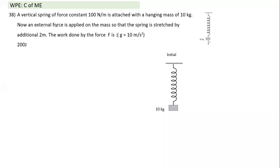Next question: a vertical spring of force constant k = 100 N/m has a hanging mass of 10 kg. 'Hanging' means the spring is already elongated by x₀ = mg/k = 10×10/100 = 1 m at rest. An external force is then applied so the spring is stretched by an additional 2 m.